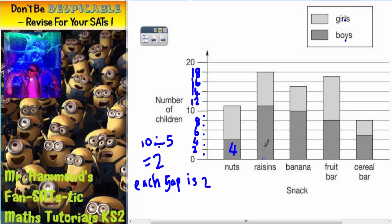Raisins is going from 0 up to this line. Now this line, if you follow it across, is halfway between 10 and 12 which is 11. Banana is going from 0 to 10. The fruit bar is going from 0 to 8. Cereal bar is going from 0 to 5.